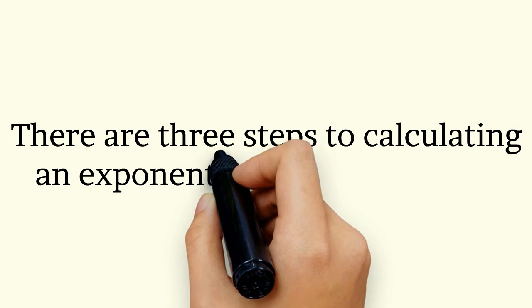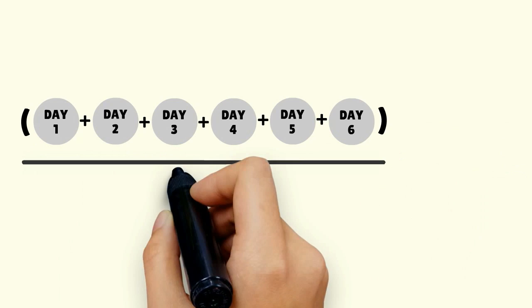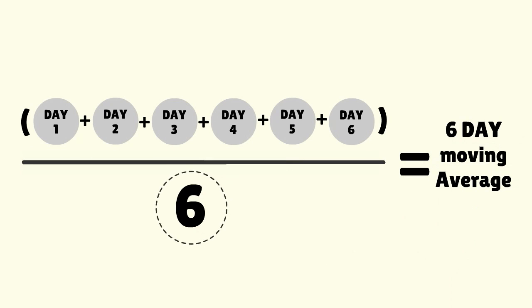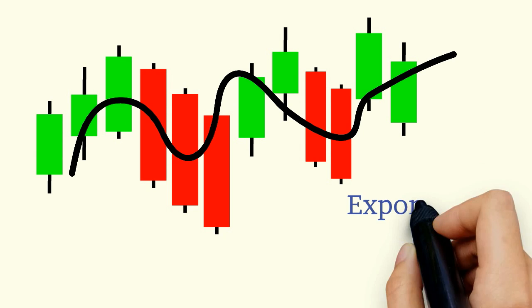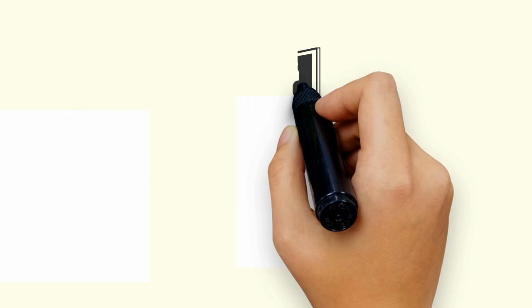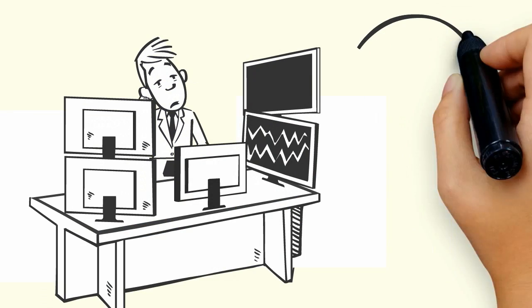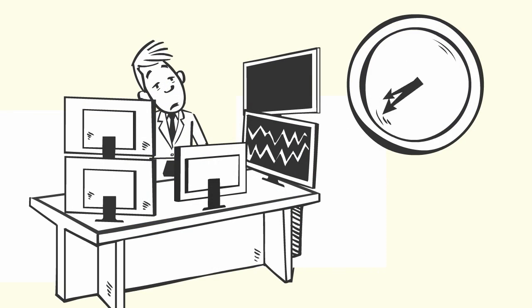There are three steps to calculating an exponential moving average. First, calculate the simple moving average. Second, determine the weighting multiplier. This varies depending on the number of days. Third, calculate the exponential moving average. A criticism of moving averages is that they are lagging, not leading indicators.